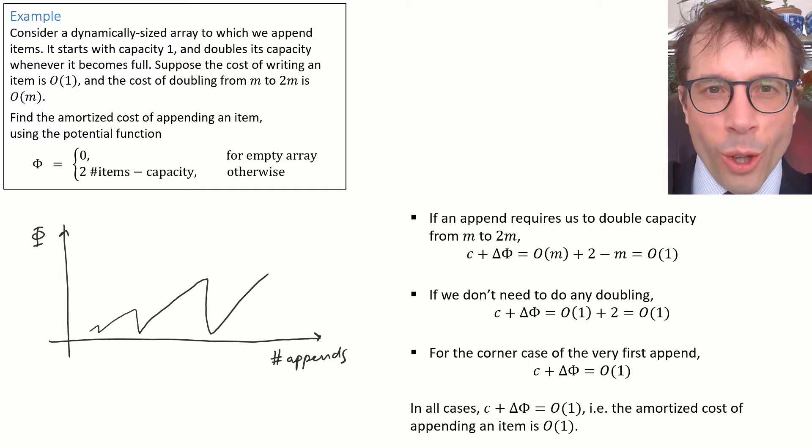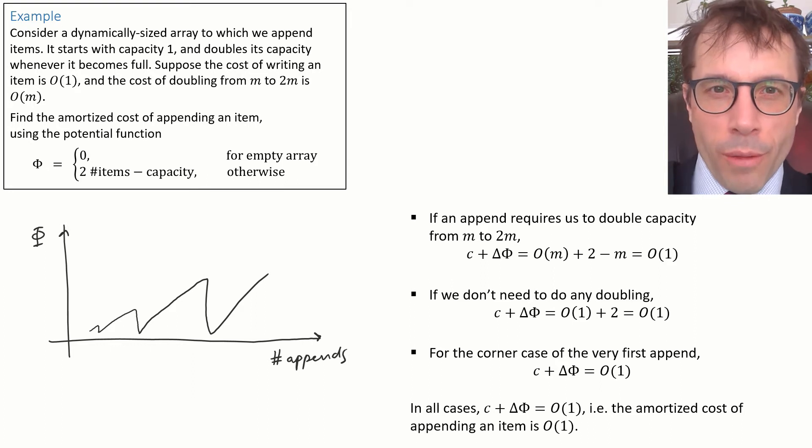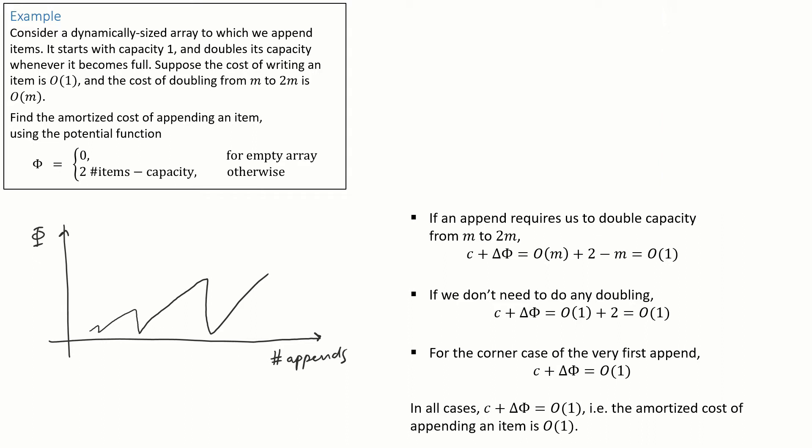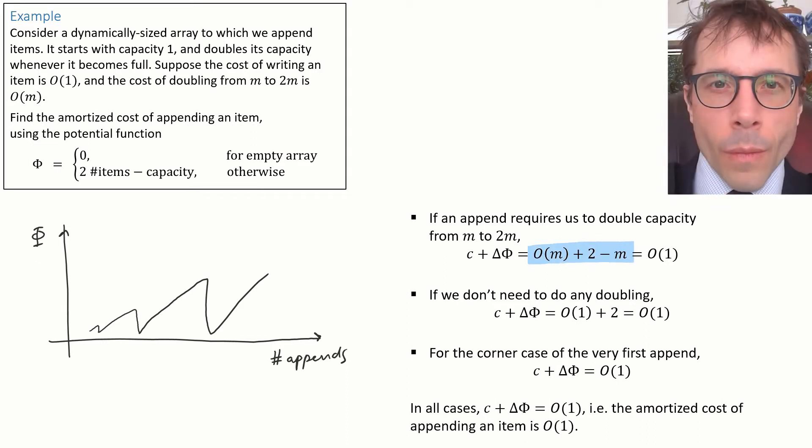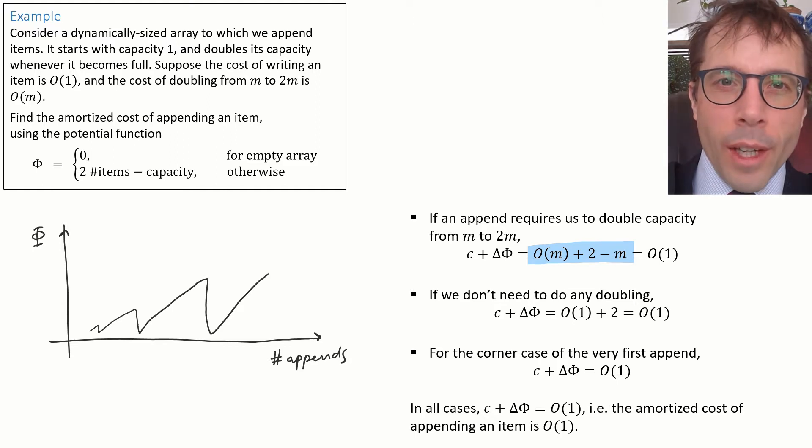Now, hold on, I hope you're thinking, the lecturer has gone mad, or sloppy, which is worse. If you're not thinking that already, pause the video and go through these steps and figure out what it is I've done here that's sloppy and then press play. Here's the issue. How on earth can you subtract m from big O of m and end up with the answer big O of 1? What does this even mean?